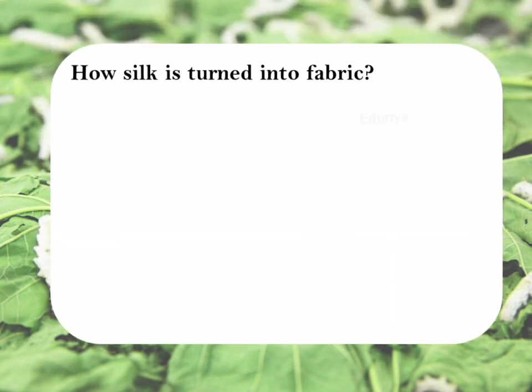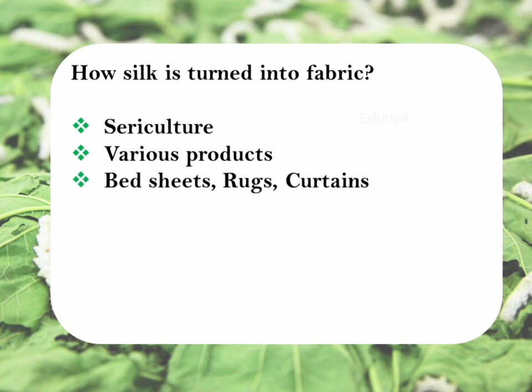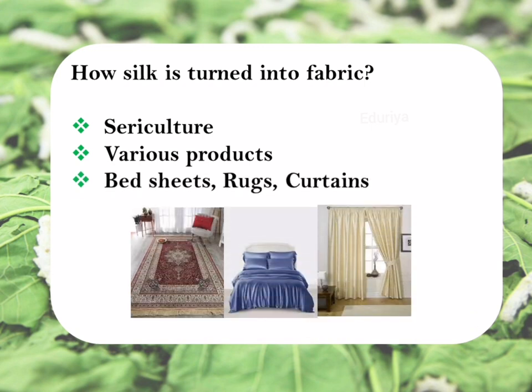Let's finally see about how silk is turned into fabric. The science of raising silkworms for the production of raw silk is known as sericulture. With the help of the processes involved in sericulture, raw silk is turned into various products like bedsheets, rugs, and curtains.